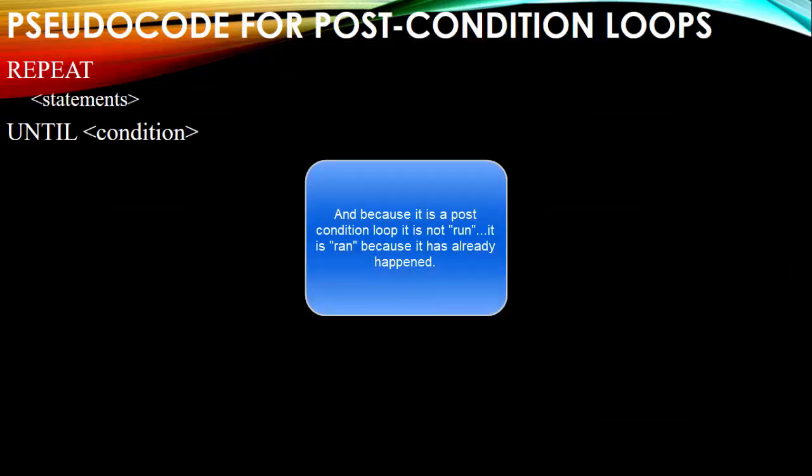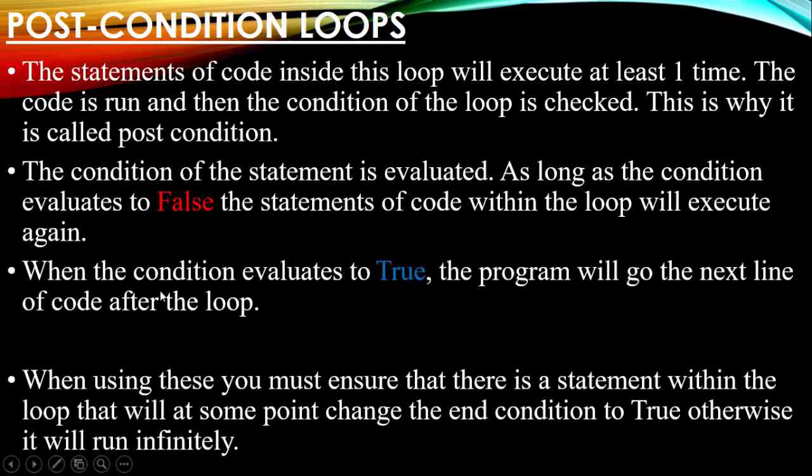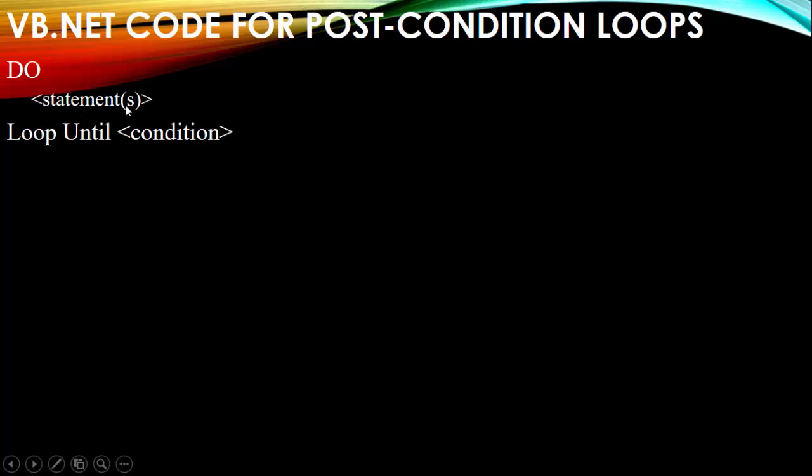Here's the pseudocode for the post condition loop. Pseudocode is just an easy way of looking at code and converting it into any high-level language such as VB.NET. We have: Repeat — our statements inside the code — Until this condition becomes true. When the condition evaluates to true, the program moves to the next line. Our VB.NET code is: Do — these statements — Loop Until this condition becomes true. That is a post condition loop.